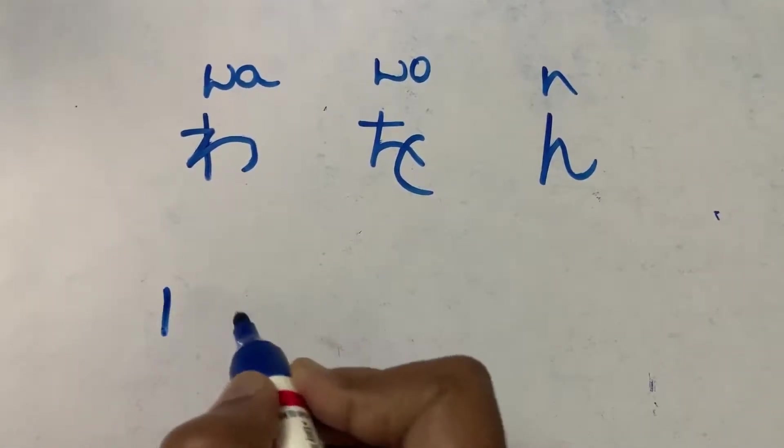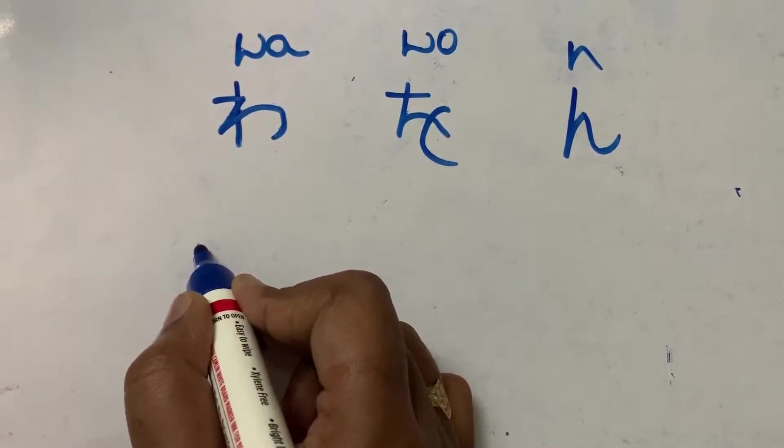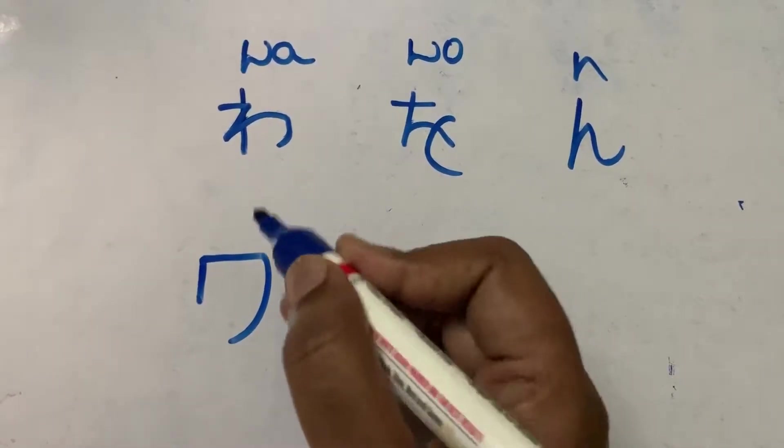And the first stroke and the second stroke. This is katakana wa.